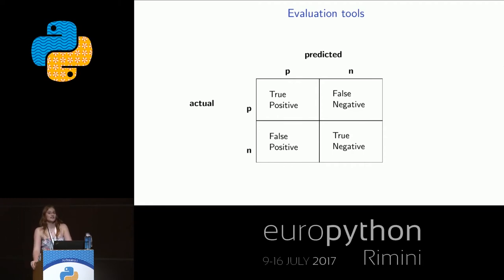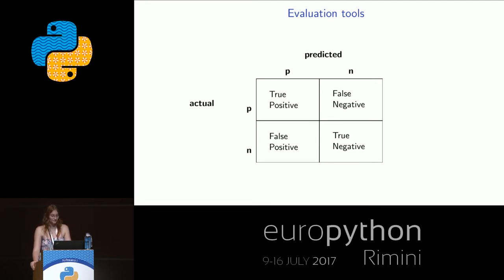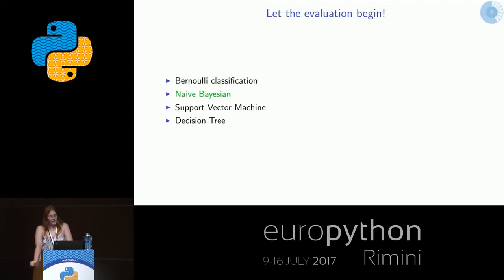I took accuracy as the main measure, and the false negative rate. In my case, I wanted to minimize the bias towards 'education required,' because it turned out we had a really small amount of non-educational job offers. I ended up checking four different models: Bernoulli classification, Naive Bayes, support vector machines, and decision tree — these are the models you start with.